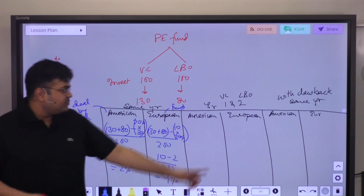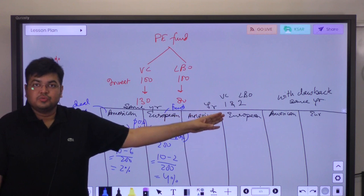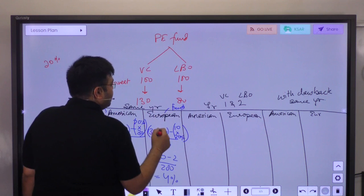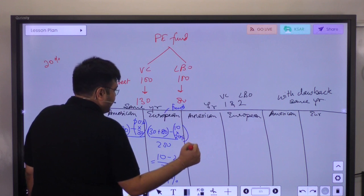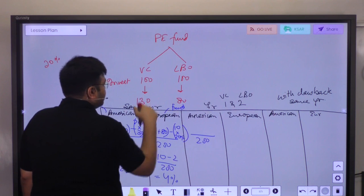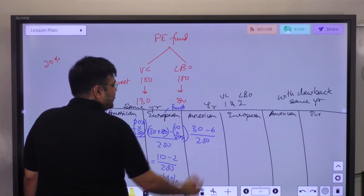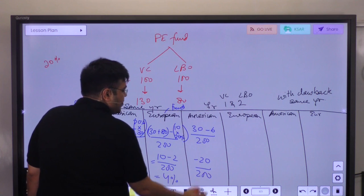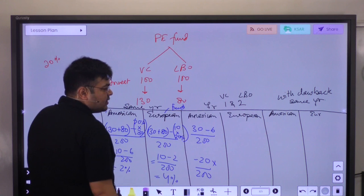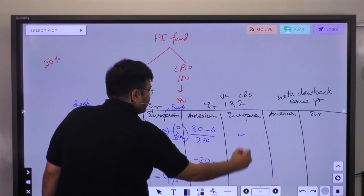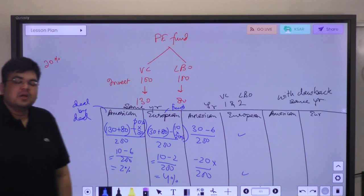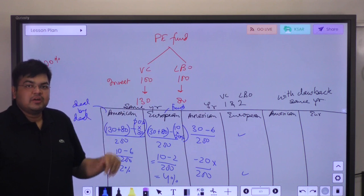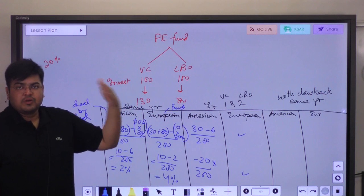Now, say the investments are realized in different years: year 1 you sell VC, year 2 you sell LBO. In year 1, on the VC investment, profit is 30, incentive fee paid is 6. In year 2, there is a loss of 20 on LBO and you pay zero incentive fee. For European as well, the answer turns out to be the same in this scenario because you can only calculate fund return on a per annum basis — you cannot set off one year's profit with another year's loss directly.